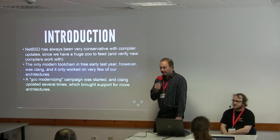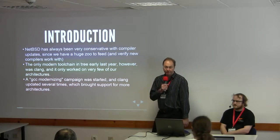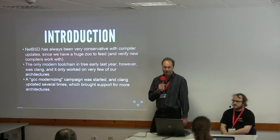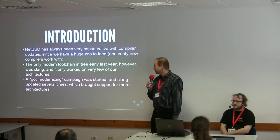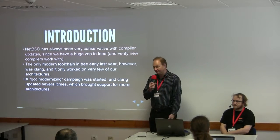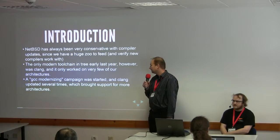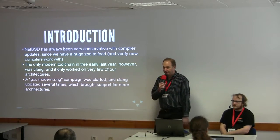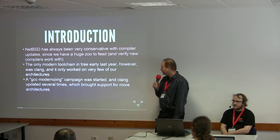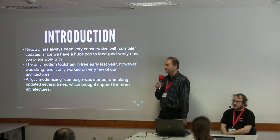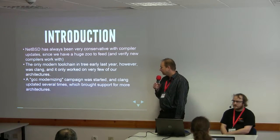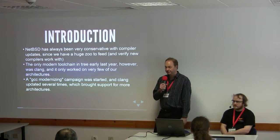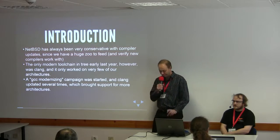We have always been pretty reluctant to use the latest GNU toolchain because it tended to be buggy in every .0 version, and as I mentioned, we have lots of architectures, and testing is not easy. But we had to do something, because the only modern toolchain we had was the optional Clang LLVM stuff, and that did not support many of these architectures. So we did a big GCC modernizing campaign, and also reorganized lots of other stuff.